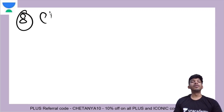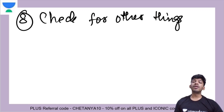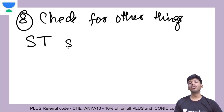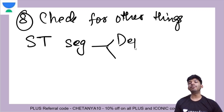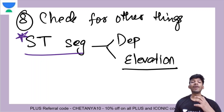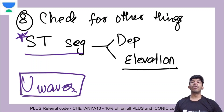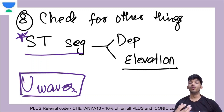The last step — step eight — is to check for other findings in the rhythm strip. First, check for the ST segment, which can be depressed or elevated; both indicate some sort of injury to the myocardium. Then check for irregular heartbeats or waves in between. You can also look at U waves — their presence can indicate a lot of things, very importantly potassium balance: hypokalemia and hyperkalemia.